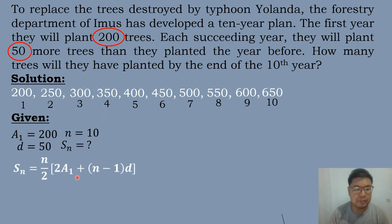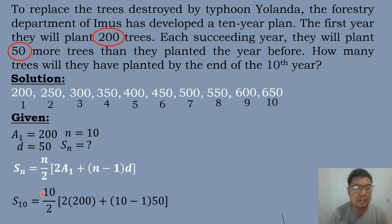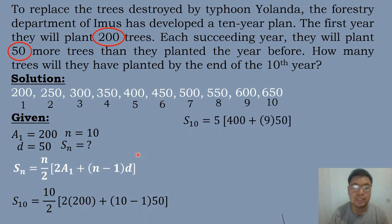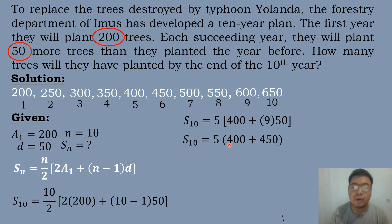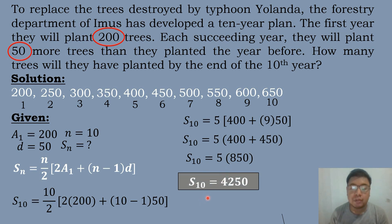We use the arithmetic series formula: S sub n equals n over 2 times the quantity 2 times the first term plus quantity n minus 1 times the common difference. Substituting: S sub 10 equals 10 over 2 times the quantity 2 times 200 plus quantity 10 minus 1 times 50. Simplifying: 5 times the quantity 400 plus 9 times 50. 9 times 50 is 450, so 5 times 850 equals 4,250.